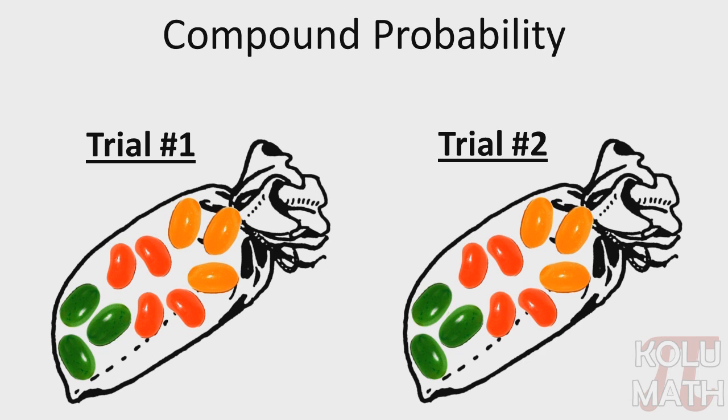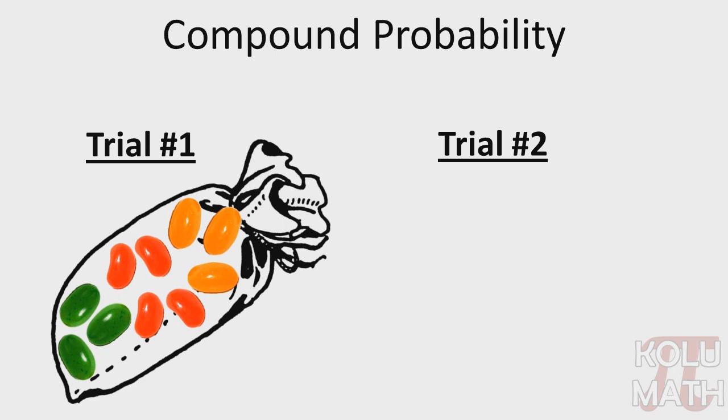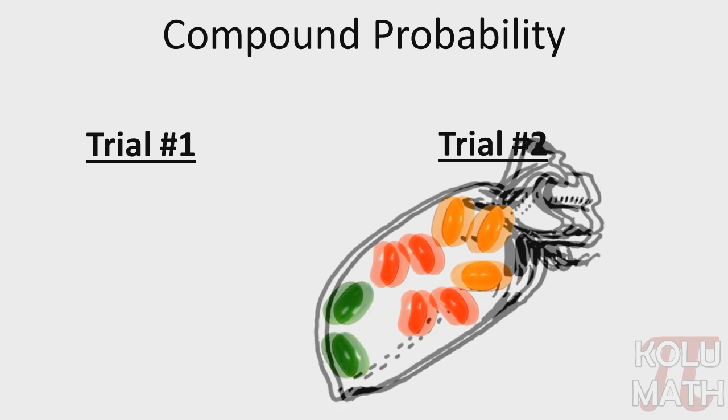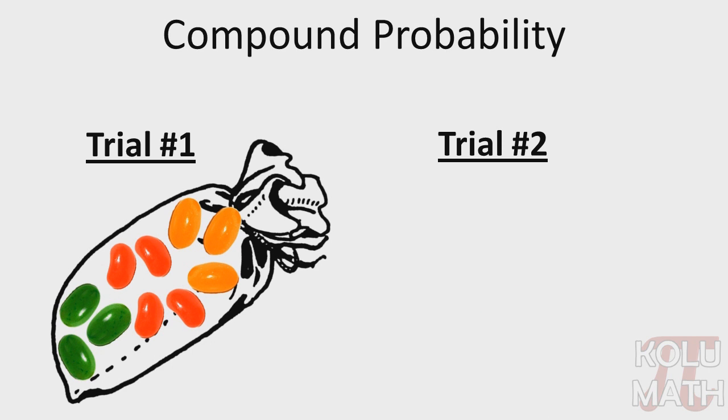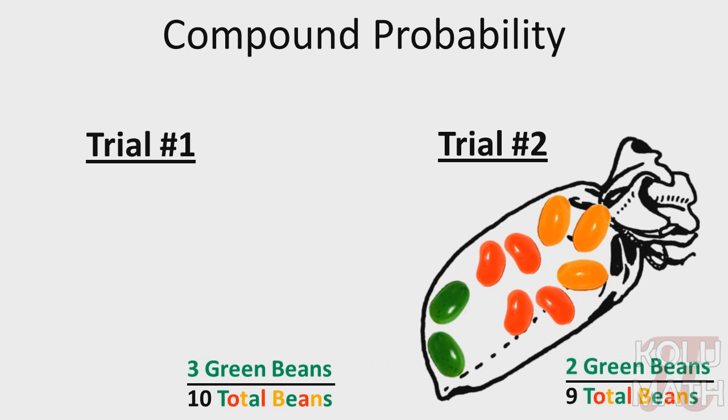So in trial one, we've got these ten beans in the bag here, and we're going to remove one. Hopefully, it's green. And then when we start our second trial, we're actually going to be starting with that very same bag. We're not going to have a fresh bag to begin with. We're going to be using the same one, and now the situation has changed. There's only two green jelly beans now, and we have a total of nine jelly beans. So our fraction is going to change. The situation has changed there in our two different trials.